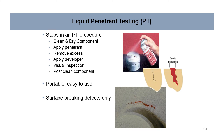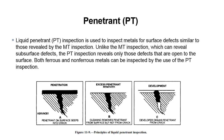Advantages: portable and easy to use, surface breaking defects only. Liquid penetrant inspection, PT, is used to inspect metals for surface defects similar to those revealed by MT inspection. Unlike MT inspection, which can reveal subsurface defects, PT inspection reveals only those defects that are open to the surface. Both ferrous and non-ferrous metals can be inspected by the use of PT inspection.